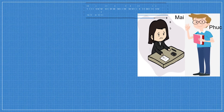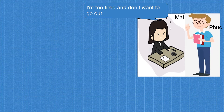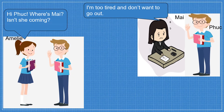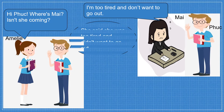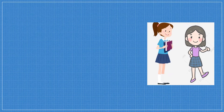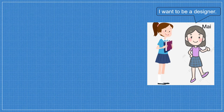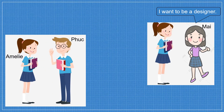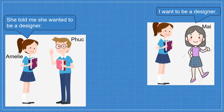Let's see what the direct speech is — what Mai said to her brother. She said she was too tired and didn't want to go out. The direct speech: she said she wanted to get a medical degree and she wanted to be a designer.